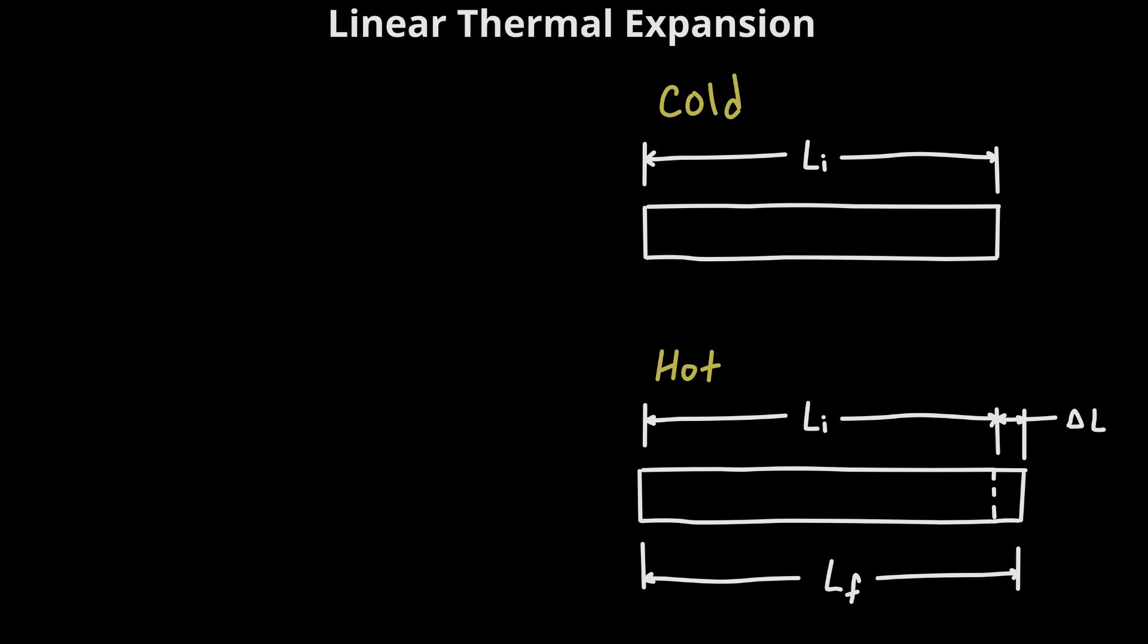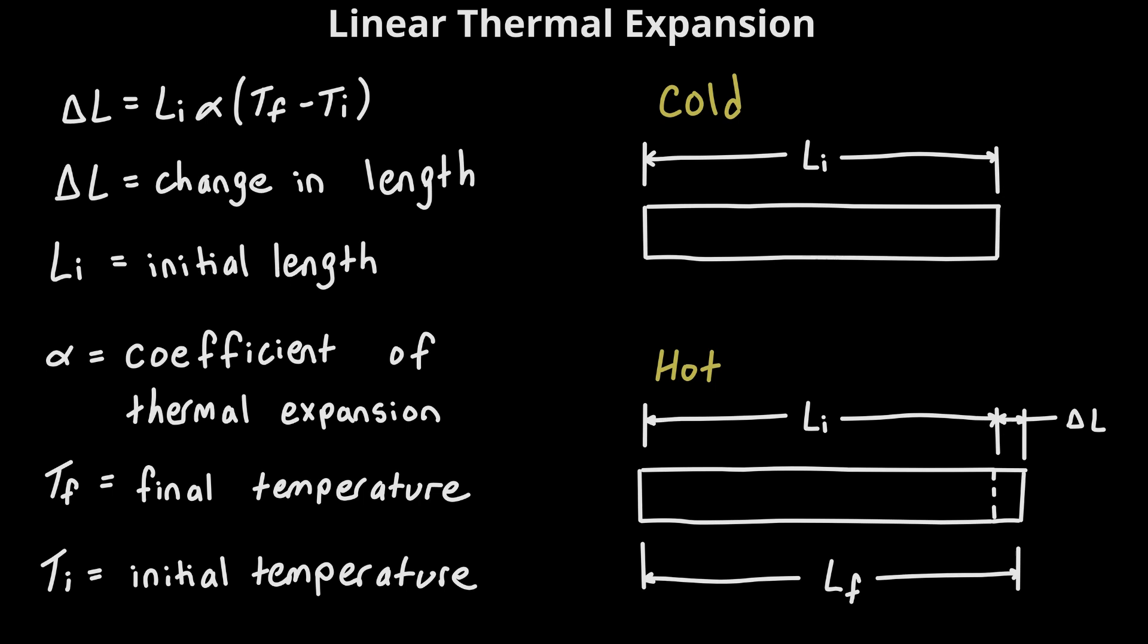Now let's see how we can calculate that change in length. The equation we have is ΔL = Li × α × (Tf - Ti). So ΔL, we said that's going to be our change in length. Li is going to be the initial length of that object.